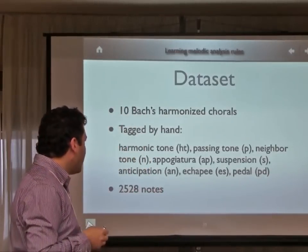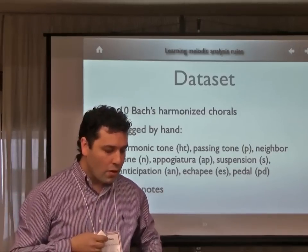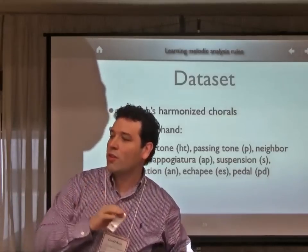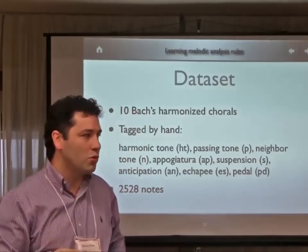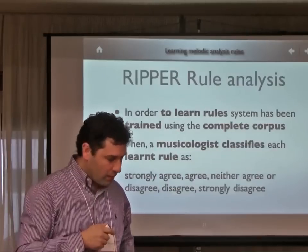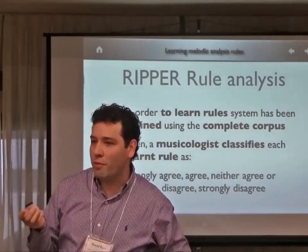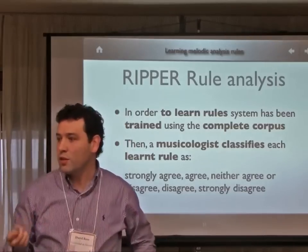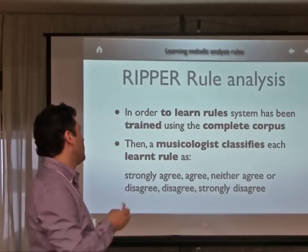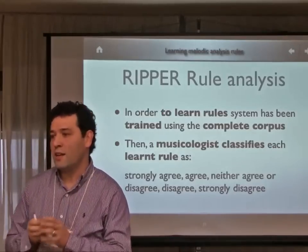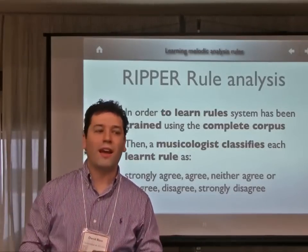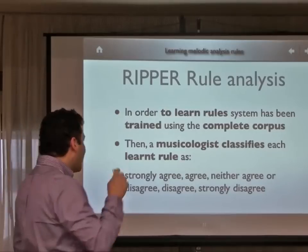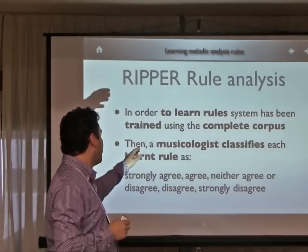We are currently focusing only on the baroque period and are working with the first 10 harmonized chorals. We used these chorals because from the academic point of view they seem to be well-suited. To know the ability of the RIPPER algorithm to learn the musical rules, we trained the system using the whole corpus, and then the musicologist analyzed all the rules output by the learning system, tagging each rule as 'strongly agree,' 'agree,' and so on.